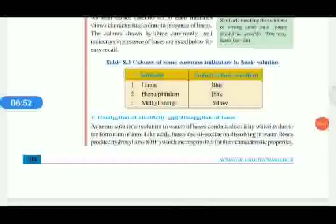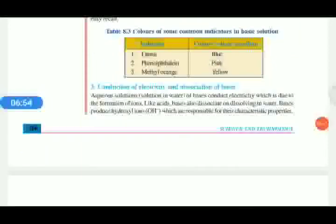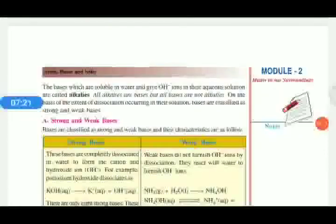Conduction of electricity and dissociation of base: just as with acids, dissociation in the case of bases means separating OH⁻ ions. For example, KOH or NaOH — sodium hydroxide is a base. When we mix sodium hydroxide in water it separates into Na⁺ and OH⁻. These OH⁻ ions help in the conduction of electricity.